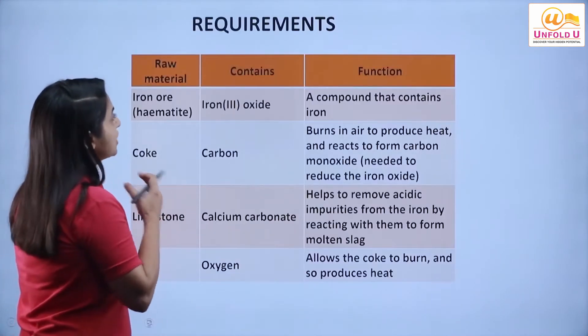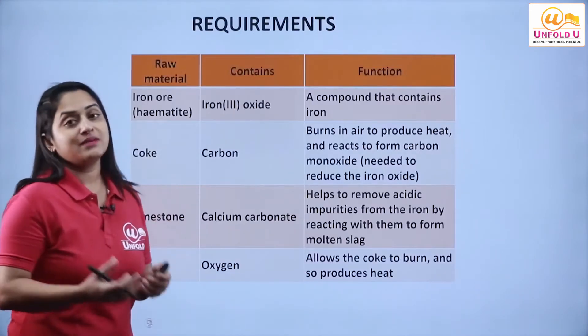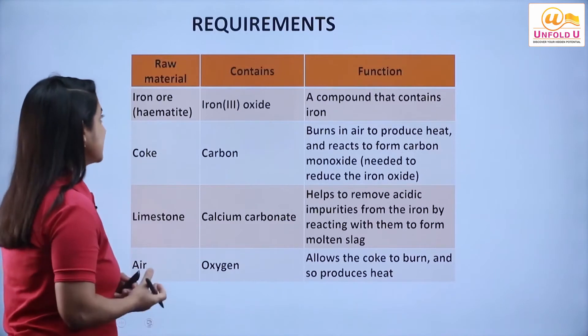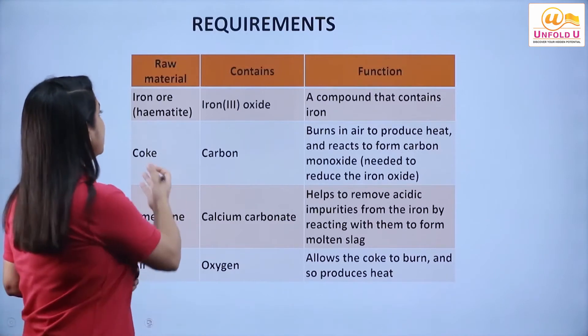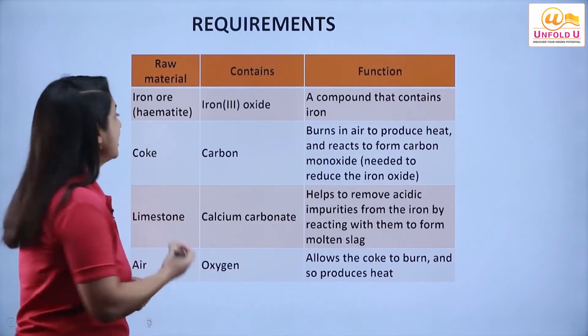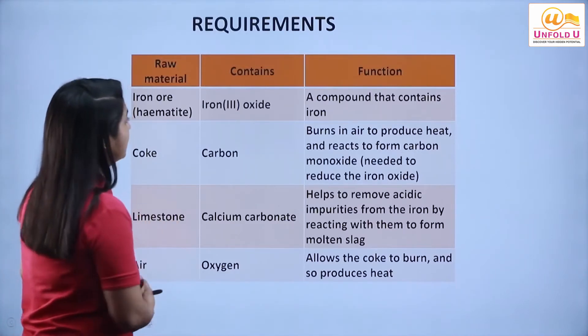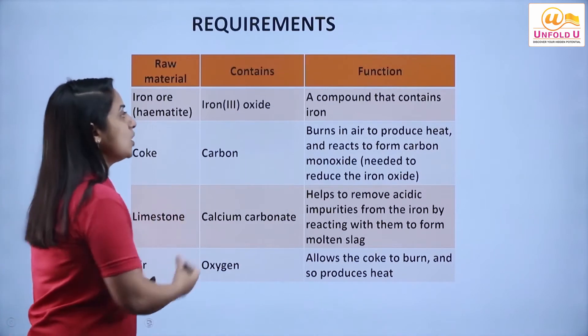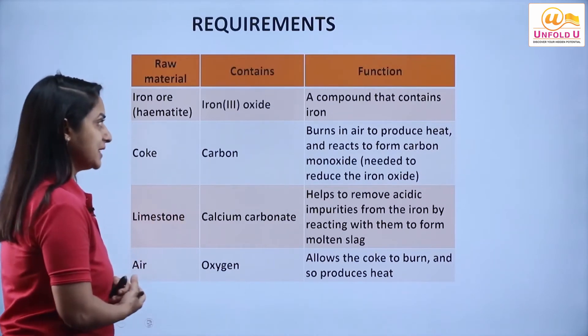What are our requirements for extracting iron? First of all, we need ore. We are taking hematite ore, in which iron(III) oxide — Fe₂O₃ — is present.